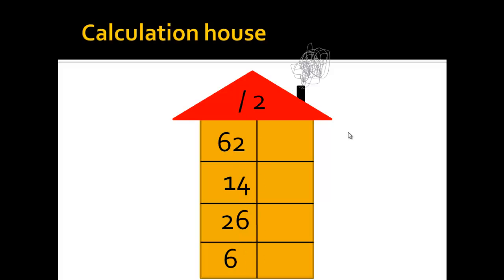In this example, you will have to divide every level by 2. So 62 divided by 2 is 31, 14 divided by 2 is 7, 26 divided by 2 is 13, and 6 divided by 2 is 3.